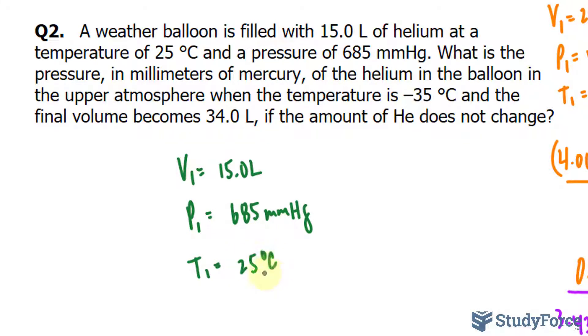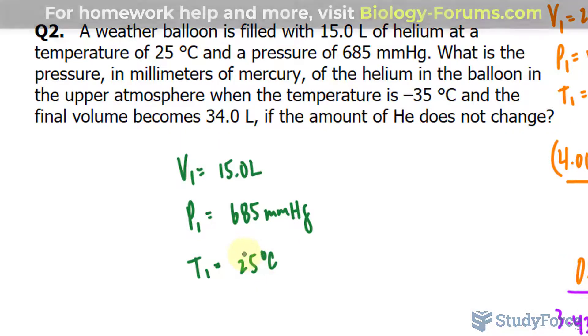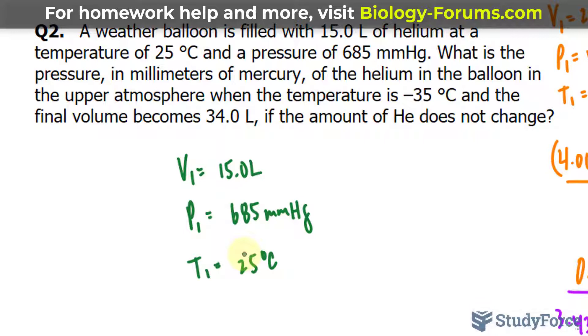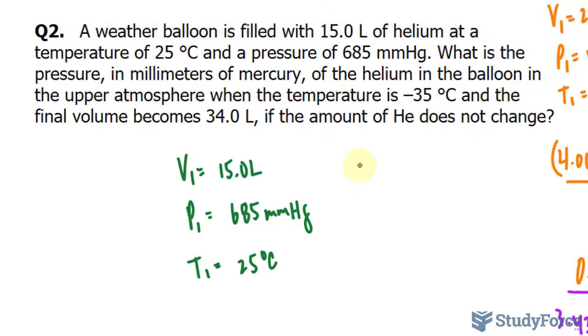It's important to note that with these types of calculations, this number needs to be converted into Kelvin. So we'll do that conversion in a moment. But the final data is that the volume is 34.0 liters, the pressure is what we're looking for, and the temperature is negative 35 degrees Celsius.